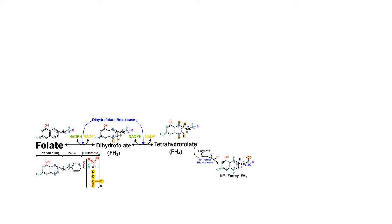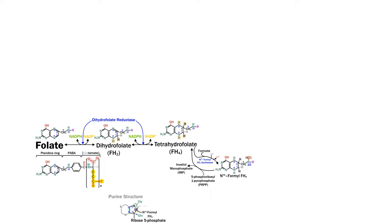N10-formyl tetrahydrofolate is needed for two reactions in the generation of the purine ring structures for the bases adenine and guanine. We start with a ribose-5-phosphate sugar, then we get a nitrogen from glutamine, and then we add an entire glycine structure, and then we have our first folate reaction. It donates the formyl group to complete the five-membered ring and goes back to tetrahydrofolate.